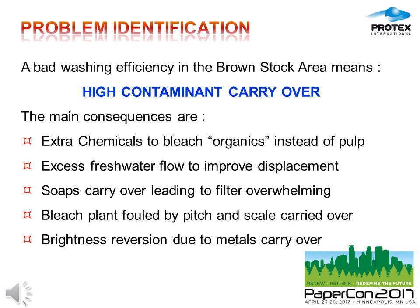It's time now to discuss the most important problems linked to a bad washing step. A bad washing efficiency means high contaminant carryover. The most important consequences are the following. First of all, extra chemicals are needed to bleach organics instead of pulp, because if you have a lot of chemicals inside the pulp, a part of the bleaching chemicals are consumed by the impurities in your pulp.